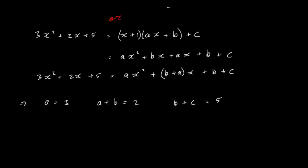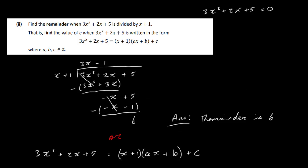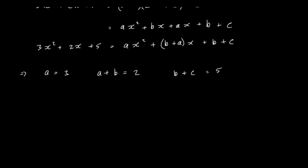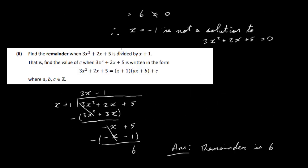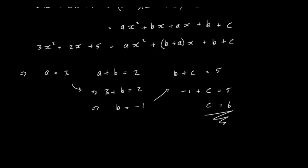That's equal to 3x squared plus 2x plus 5. Equating coefficients: a equals 3; a plus b equals 2, so 3 plus b equals 2, giving b equals minus 1; and b plus c equals 5, so minus 1 plus c equals 5, giving c equals 6. We were just asked for the value of c, which is 6. The remainder from the long division was also 6 — so c equals 6 is our answer.